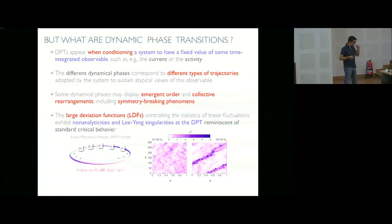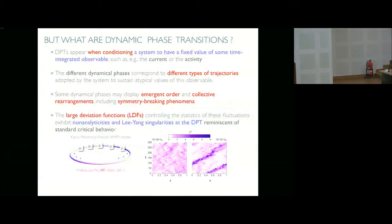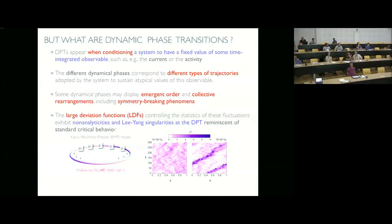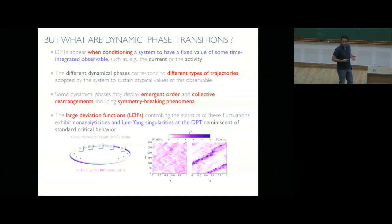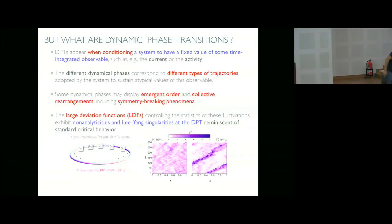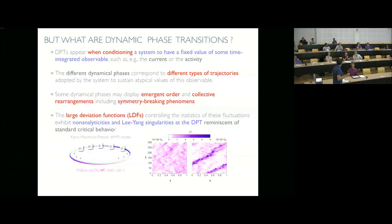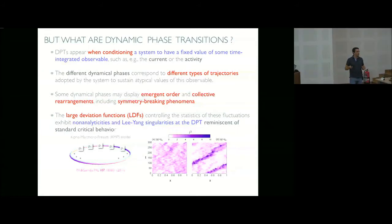We believe this has a second-order type of phase transition there. Analytically you have a second-order jump there. This is an equilibrium system — if you forget about the conditioning, it's equilibrium, homogeneous, trivial. But as soon as you start conditioning on the current, you have this funny behavior. The probability of observing this by just chance is essentially waiting the age of the universe. But the theory tells you: if you happen to see this current, you will see something like this. You can also look at fluctuations from an active point of view — ask which external field you should apply to make this atypical current the typical behavior.